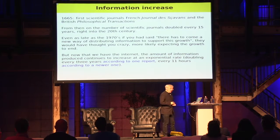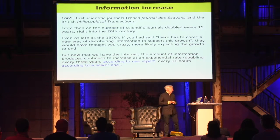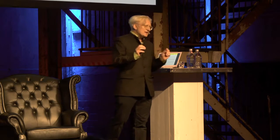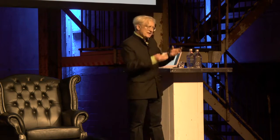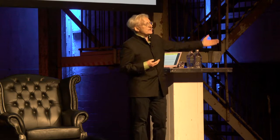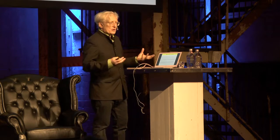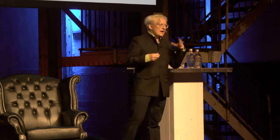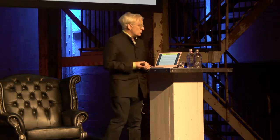By 1665, there were so many scientific books that the first two scientific journals emerged — one in France, the Journal des Sçavants, and one in Britain, the Philosophical Transactions. These journals were created differently from how we now think of scientific journals. They were actually there to summarize the information overflow people were experiencing, to tell you which book to read if you were interested in a particular subject. They were like indexes of information.